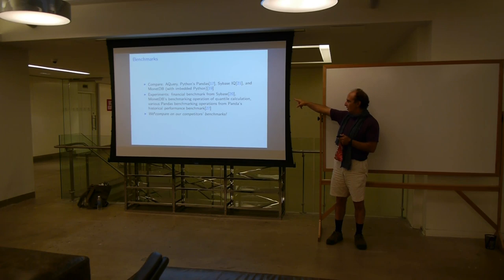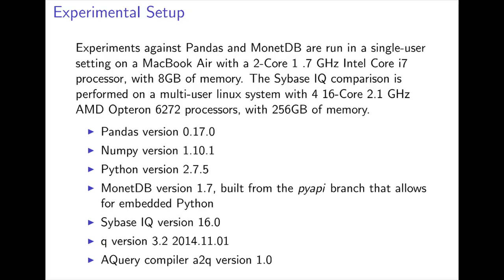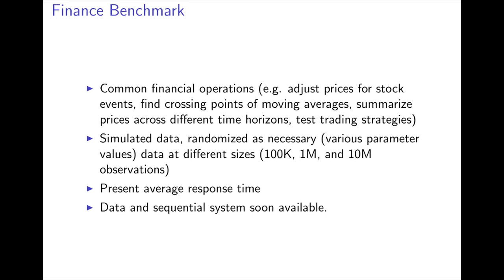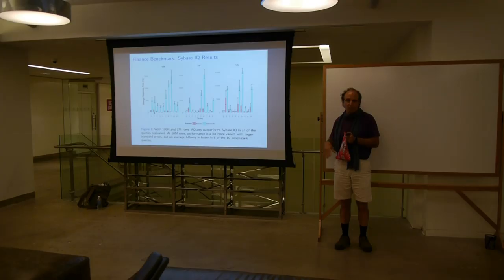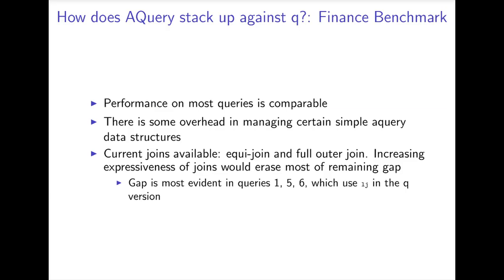Of course, we have a big advantage because we have Q underneath, but still we beat them on their benchmarks. The main one is a financial benchmark from Sybase, with common financial operations: adjust prices for stock events, look at crossing points of moving averages — doing all the kind of numerological things that finance people sometimes do successfully. We just present the average response time. If we compare it to Sybase IQ, our system is the red one and Sybase is the blue one — higher is more response time. As you can see, we're really much faster.